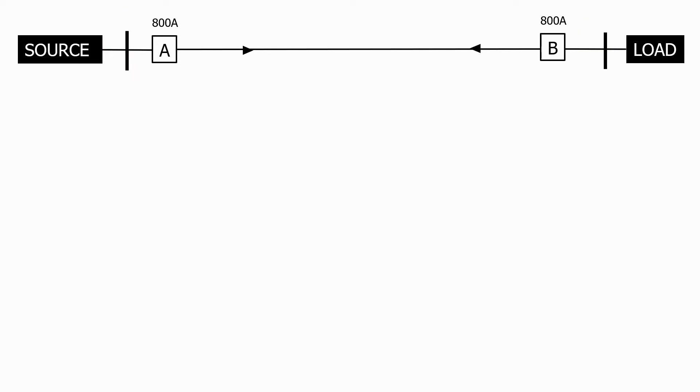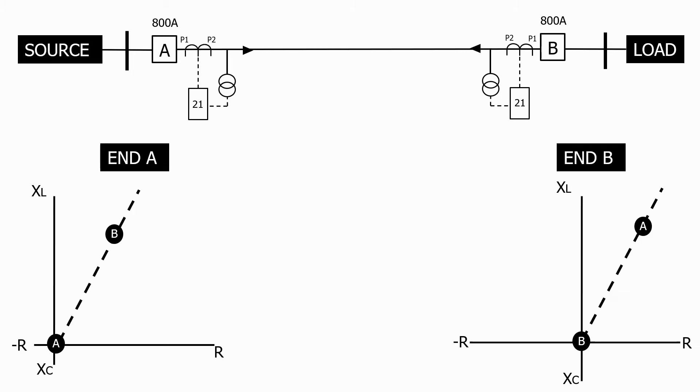We do this by putting an impedance relay at each end of the feeder. We set up a zone 1 for end A and a zone 1 for end B.